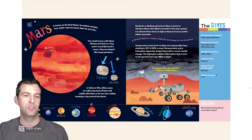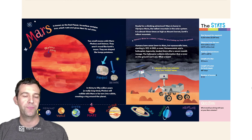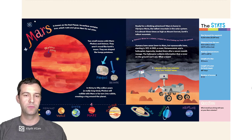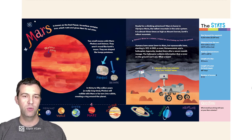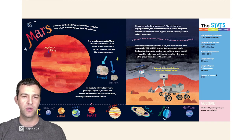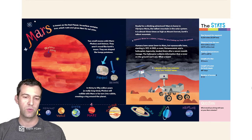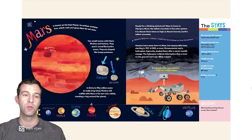Mars is known as the Red Planet. Its surface contains iron which rusts and gives Mars its red color. Two small moons orbit Mars, Phobos and Deimos. They aren't round like Earth's moon. They are shaped like lumpy potatoes. In 30 to 50 million years, which is a really long time, Phobos will collide with Mars or be turned into rubble, creating a ring around the planet.